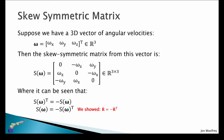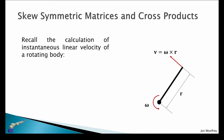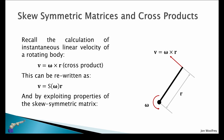Again, we showed that the time derivative of the rotation matrix satisfies R_dot equals negative R_dot transposed. As a side note about skew symmetric matrices and cross products: recall that the instantaneous linear velocity of a rotating body is v equals omega cross r. This can be rewritten as v equals skew(omega) times r, and by exploiting properties of a skew symmetric matrix, we can rewrite this as v equals negative skew(r) times omega.